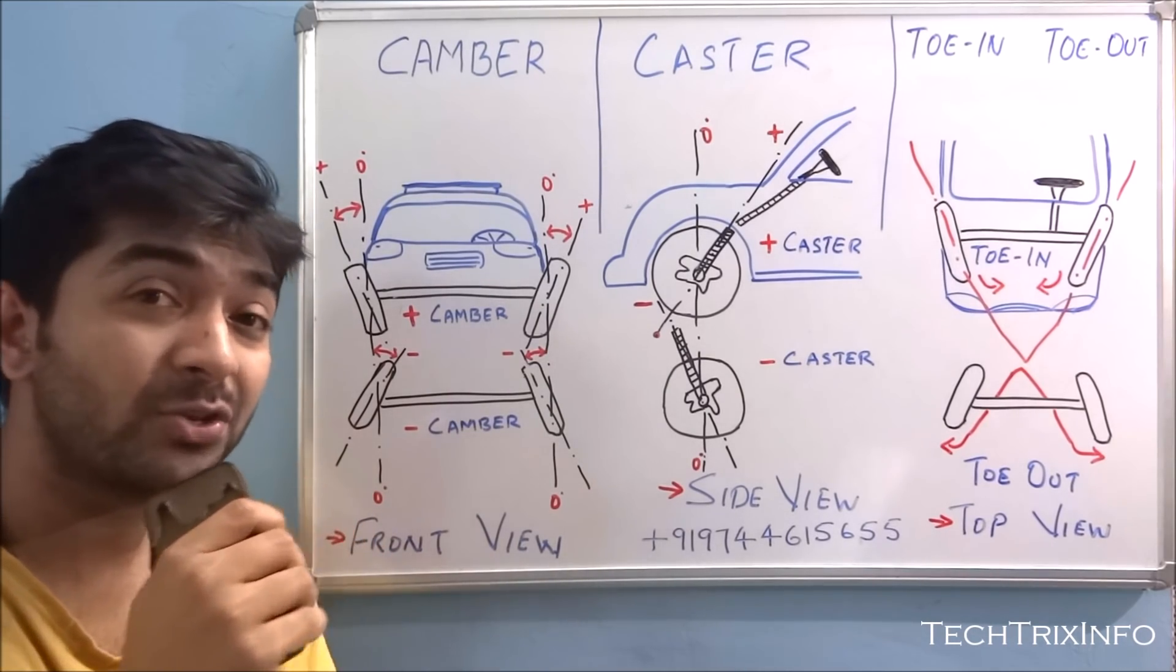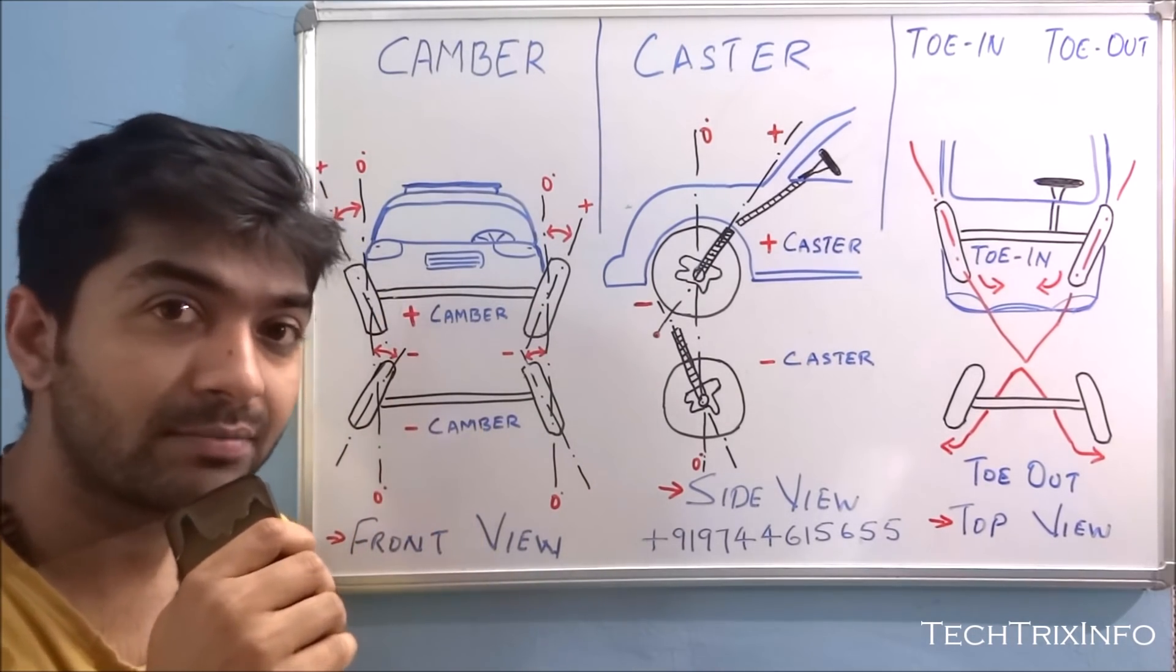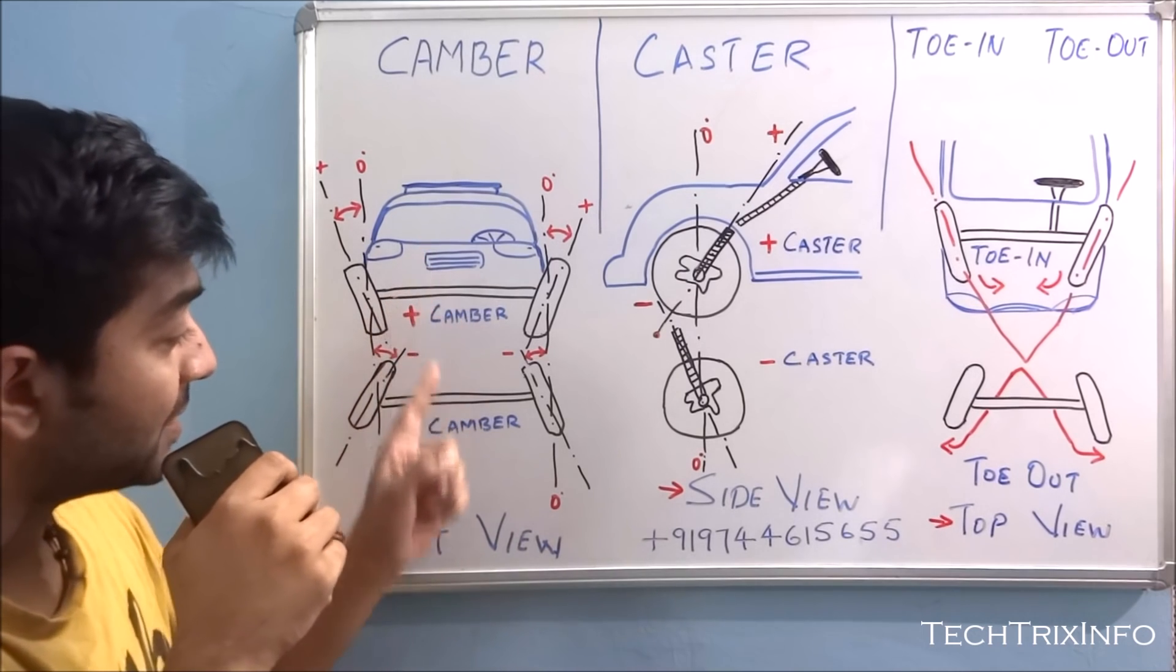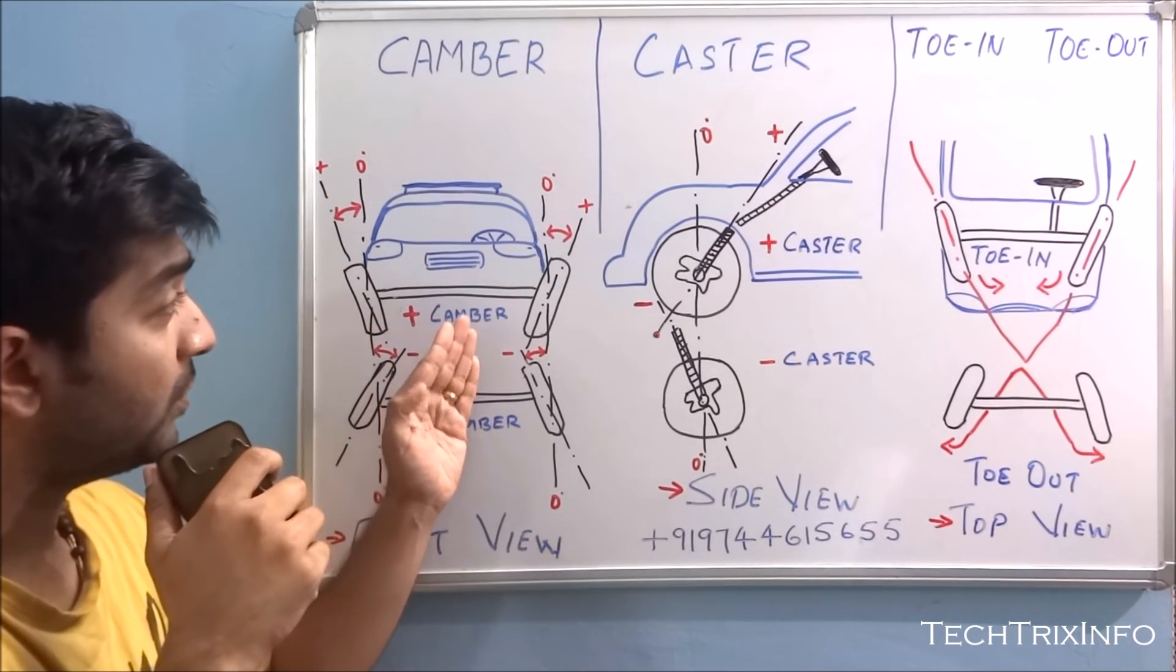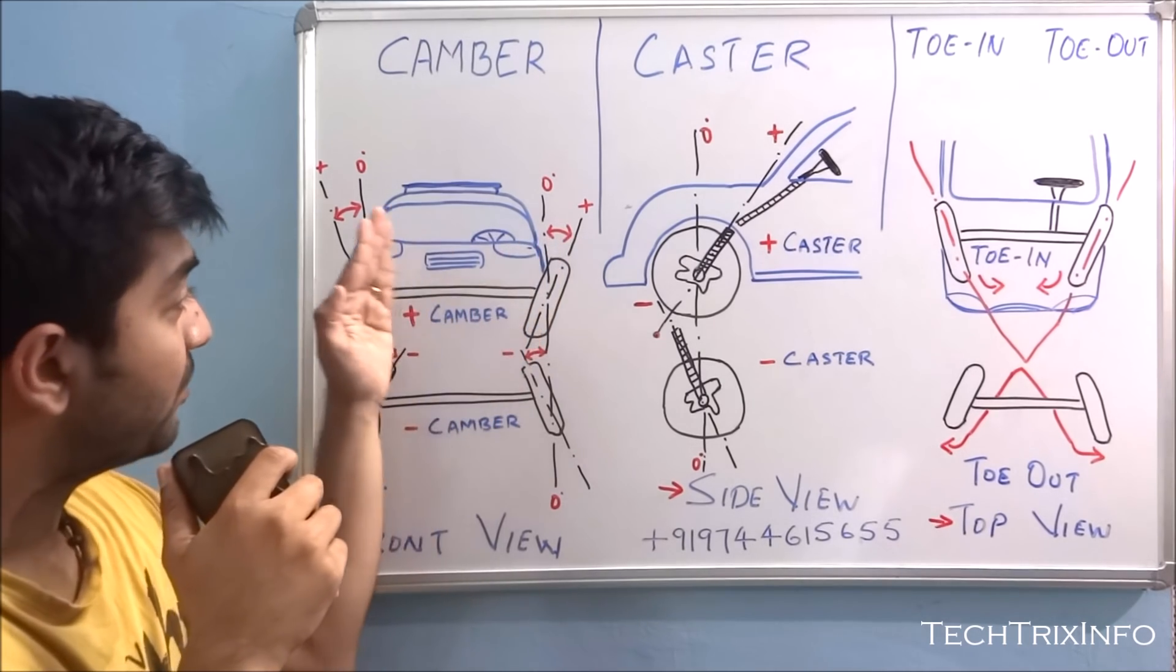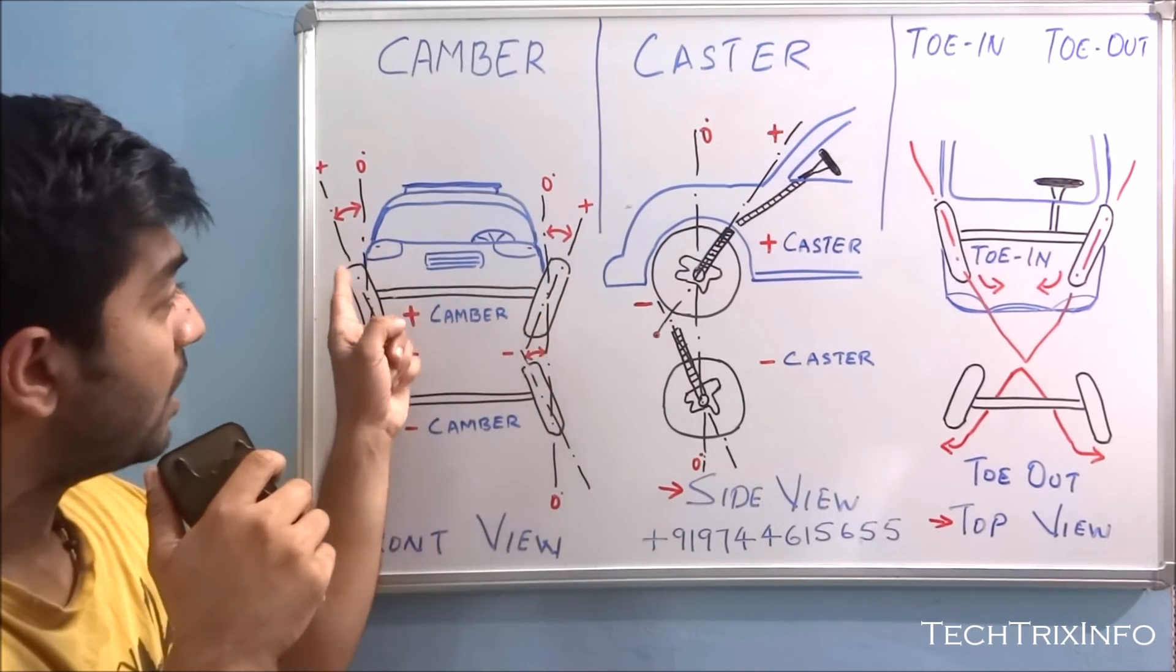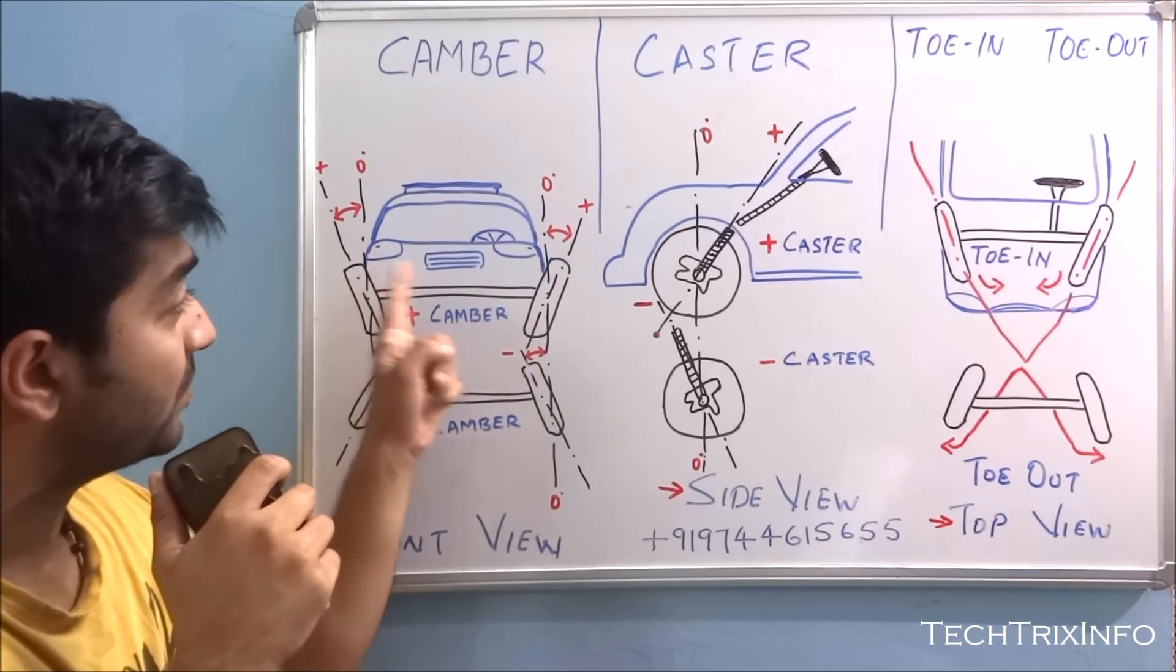First, I'll explain camber. Camber is simply the angle of the tire with respect to the vertical axis of the car. So here you can see it is associated with the front view of the car. This is a front view. You can see the tires are projecting outside. The top end of the tire is projecting outside in the right hand and left hand side.